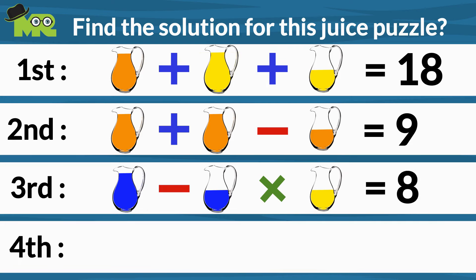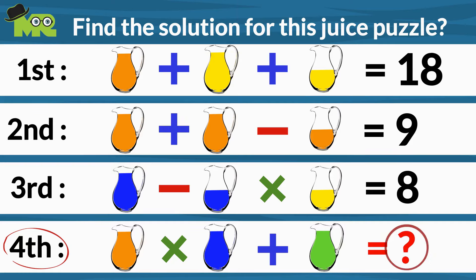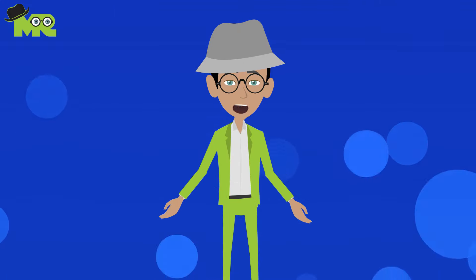What would your answer for the fourth equation be if this jug of orange juice multiplied by a jug of blue juice plus a jug of green juice? Let's see what the right answer for this fourth equation.